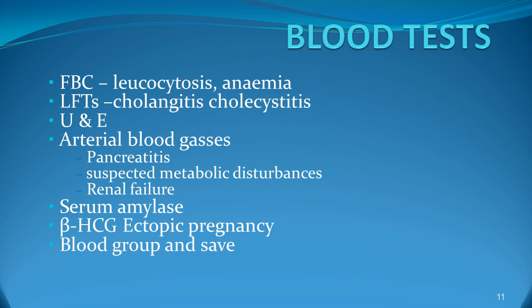One has to investigate with FBC — raised WBC leukocytosis and anaemia can occur with various abdominal conditions. LFTs — think of cholangitis and cholecystitis. Urea and electrolytes. Arterial blood gas is important in pancreatitis, suspected metabolic disturbances, and renal failure. Serum amylase to rule out pancreatitis. Beta-HCG to rule out ectopic pregnancy. Blood group and save should be done at the same time.